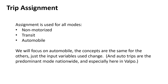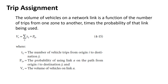For trip assignment, we'll focus on automobile since 80–90% of trips in the U.S. are made by personal automobile — in Valpo it's probably 95%. The volume of vehicles on a certain route is a function of the number of trips going between zone i and zone j, times the probability of using a certain path. That's path assignment. If we have three routes with three probabilities, those probabilities must sum to one.